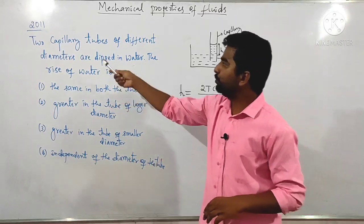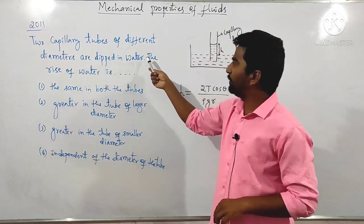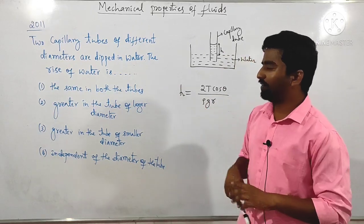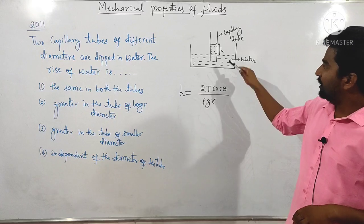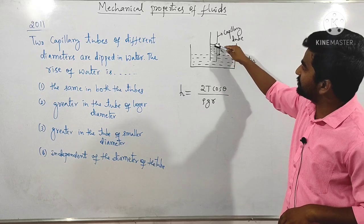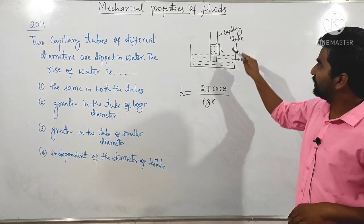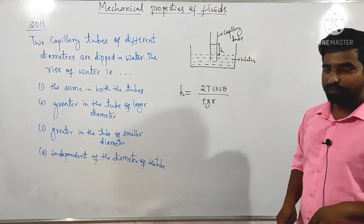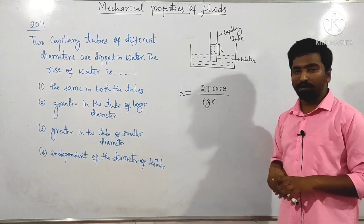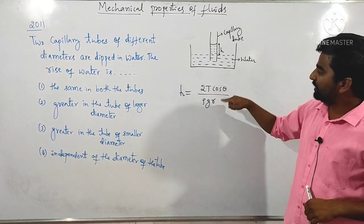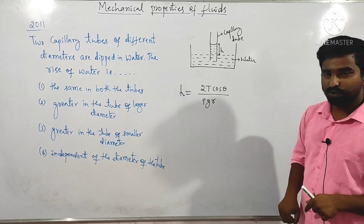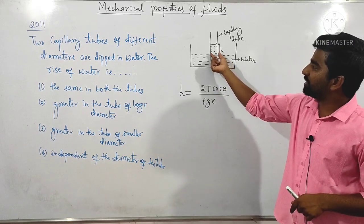Next question also asked in 2011: two capillary tubes of different diameters are dipped in water. The rise of water through a capillary tube depends on what factor? The capillary rise formula is h = 2T cosθ divided by ρgr, where T is surface tension, θ is the angle of contact, ρ is density of the liquid, g is acceleration due to gravity, and r is the radius of the capillary tube.